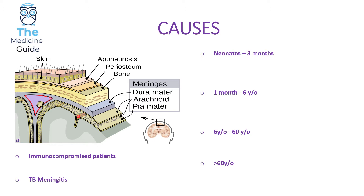The causes of meningitis vary depending upon your age and also any past medical histories. If a patient is aged under three months, they're likely to suffer from meningitis due to a Group B Streptococcus infection, E. coli infection, or a Listeria monocytogenes infection.